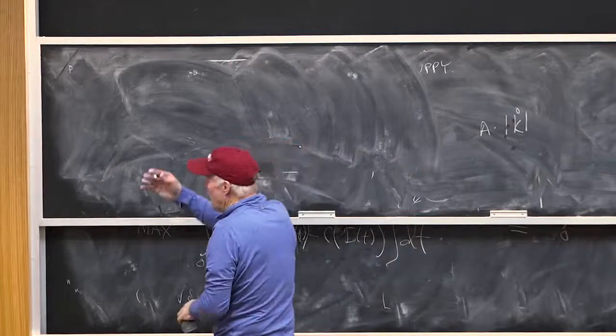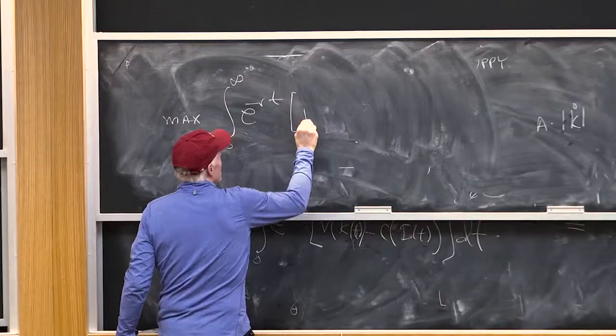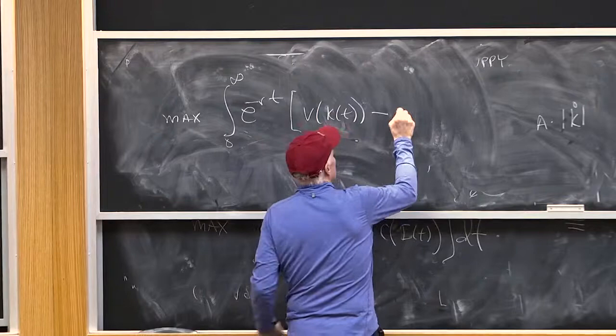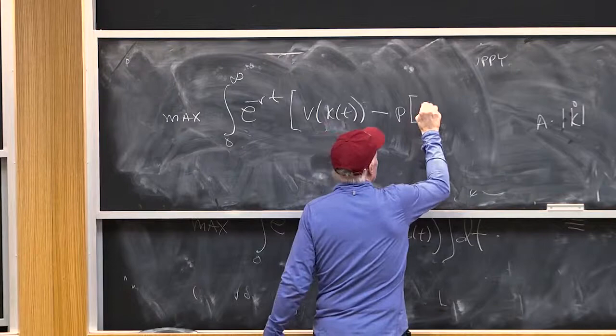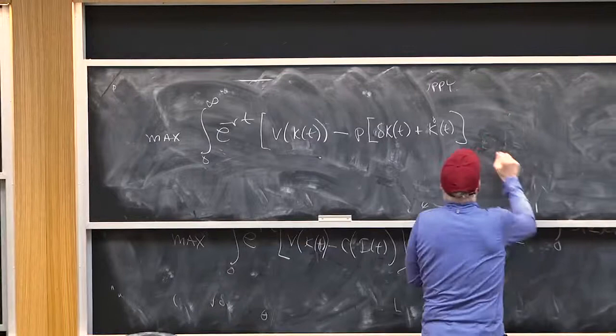We're gonna max integral from 0 to infinity e to the minus rt times v of k of t minus what I call p times k delta k of t plus k dot of t minus a times 1 over 2 k dot of t squared.